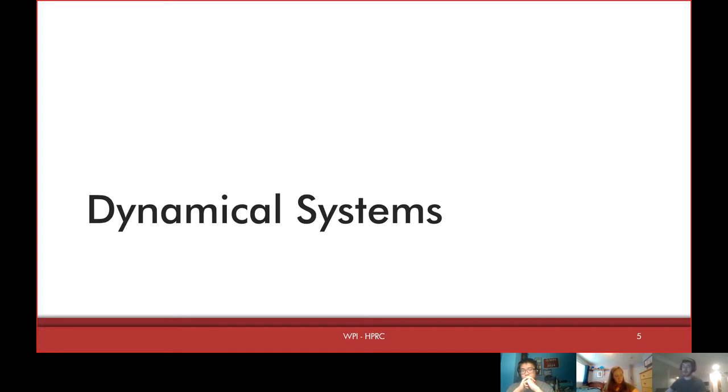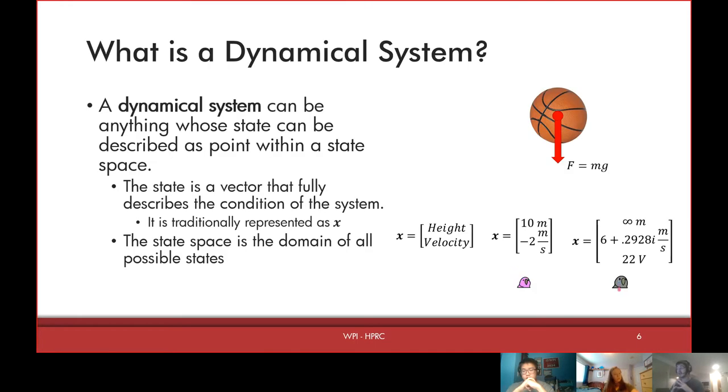Before we talk a lot more about control theory stuff, I want to do some background on dynamical systems though, since that's kind of important. Just in general, a dynamical system has a, it's a system where you can describe the current state as a point within a state space. And basically what that means is, you know, a state space is essentially your domain of all possible states and your current state occupies a point in that.